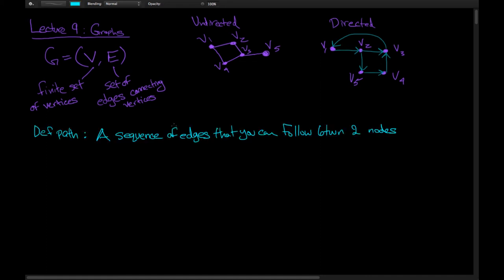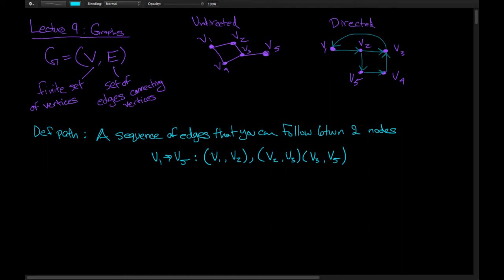Now we're going to define a few things because we have to get comfortable with the vocabulary of graphs before we can do interesting things with them. First we're going to define a path. A path is a sequence of edges that you can follow between two nodes. For example, a path between V1 and V5 would be given by the edges V1 to V2, followed by V2 to V3, followed by V3 to V5.